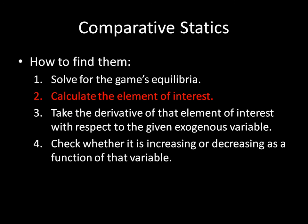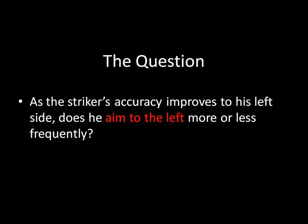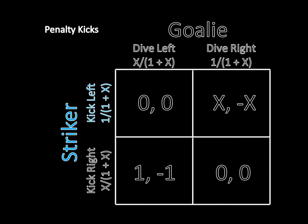The second step is to calculate the element of interest. The question is: as the striker's accuracy improves to his left side, does he aim to the left more or less frequently? So we need to solve for the probability that he aims to the left. Since we've already calculated the mixed strategy Nash equilibrium, the striker is kicking to the left with probability 1 over 1 plus X. This can be more complicated if we were asking about expected utility, which would require another calculation step, but here we're just interested in the kicker's strategy.